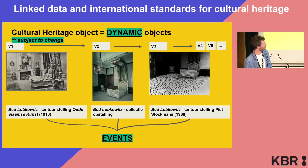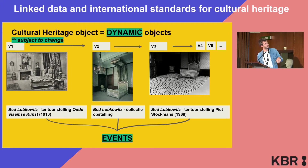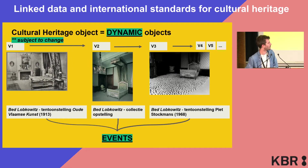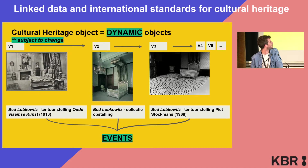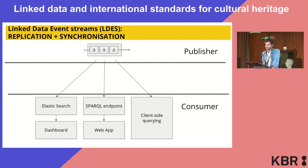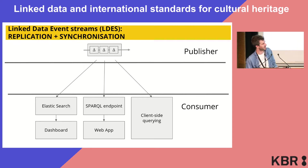It's a specification that was originally used in the sensor data space, which deals with much faster data. But it's also very interesting in cultural heritage because it allows us to publish different records of an object at different points in time. In terms of data preservation, this is very interesting because it means we could, in theory, backtrack how an object was described last month, last year, or maybe even ten years ago if the specification keeps standing.